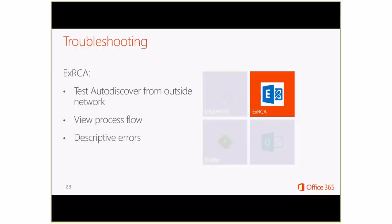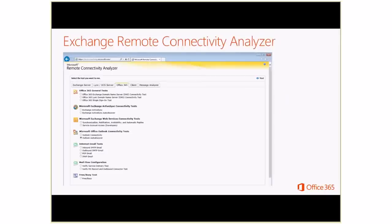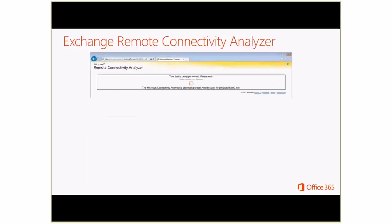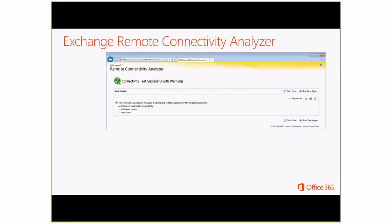I've provided a couple of slides showing what the tool looks like. You can see there's an Office 365 tab, and down in there you can select the Outlook AutoDiscover test. When you perform the test, it will ask for the email address, Microsoft account username, and password. There's also a verification to confirm you're a human. When the test runs, it updates every few seconds showing what it's testing. When it completes, you'll get either a success, success with warnings, or an error.